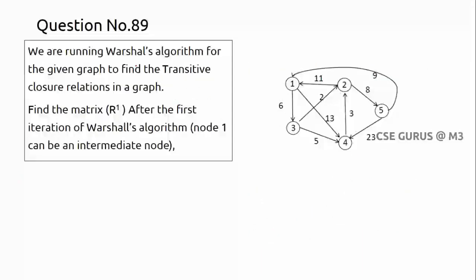Coming to question number 89, we are running Warshall's algorithm for the given graph to find the transitive closure. Warshall's algorithm is used for transitive closure relations in a graph. The main difference between Floyd-Warshall and Warshall's algorithm is: in Floyd-Warshall you take the weights for each edge, whereas in Warshall's algorithm you only check whether a path exists — it uses a boolean matrix.